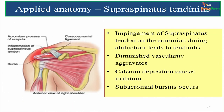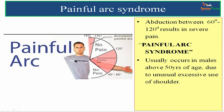Applied anatomy. The first important clinical condition is supraspinatus tendinitis. There is impingement of the supraspinatus tendon on the acromion process during abduction movements, which can lead to tendinitis or inflammation of the supraspinatus tendon. There is diminished vascularity which can aggravate the condition, and calcium deposition can cause irritation and burning sensation, which can result in subacromial bursitis. The next condition is painful arc syndrome, where abduction between 60 to 120 degrees results in severe acute pain. It usually occurs in males above 50 years due to unusual excessive use of the shoulder.